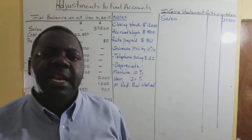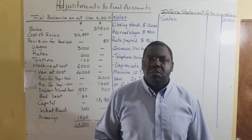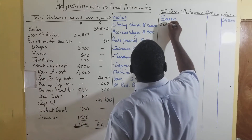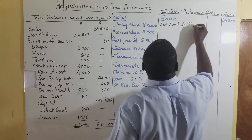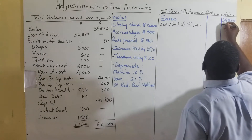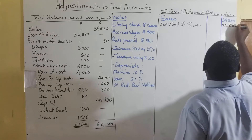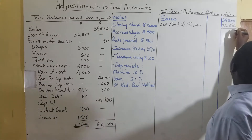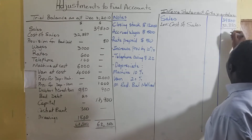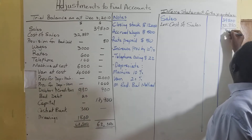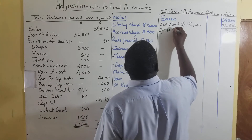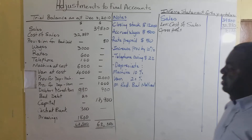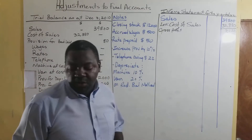Our cost of sales — which is the same thing as cost of goods sold — we're going to subtract that. The cost of sales is $32,380. When we subtract that, we get $7,120, and that would be our gross profit.